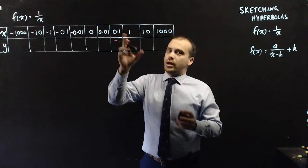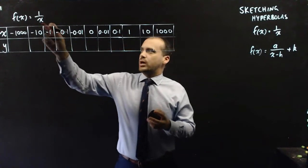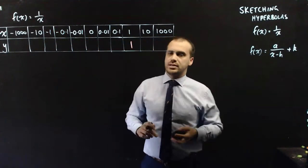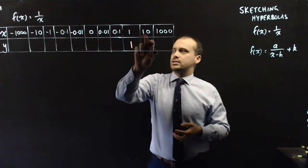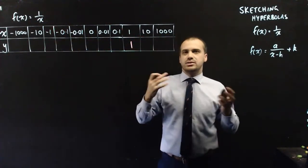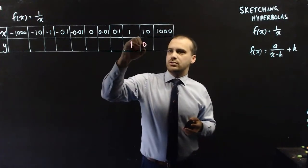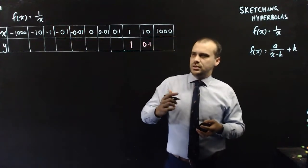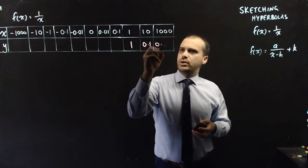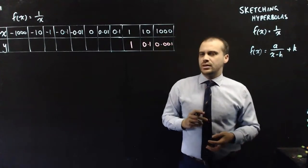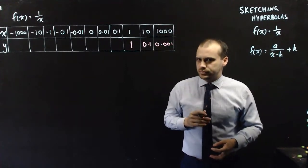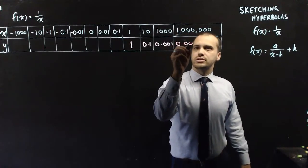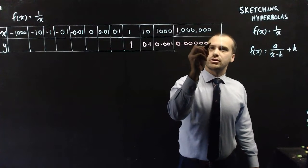Let's put in the number 1. If I let x equal 1, then 1 divided by 1 is 1. What about 1 divided by 10? That's 1 tenth, or 0.1. What about 1 divided by 1,000? That's 0.001. And 1 divided by 1,000,000 would be 0.000001.